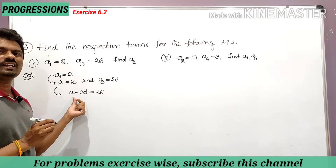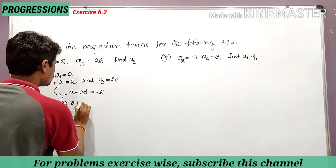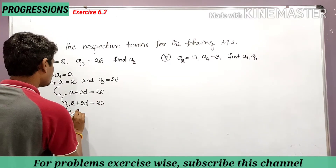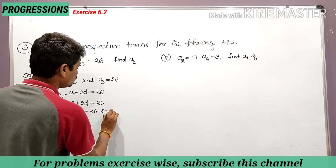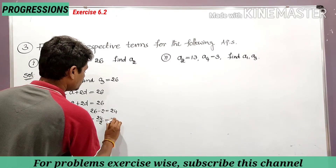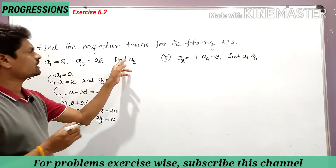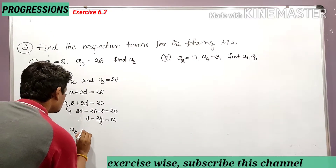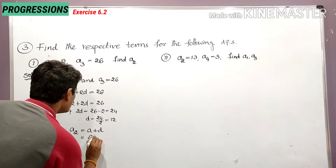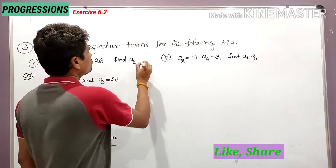We have a is equal to 2, just substitute here to get the d value. Substituting a equal to 2: 2 plus 2d is equal to 26. Taking 2 to the right side: 2d is equal to 26 minus 2, which is 24. Therefore d is equal to 24 divided by 2, so d is equal to 12. Now we have a and d values. a2 is equal to a plus d, which is 2 plus 12, so a2 is equal to 14.